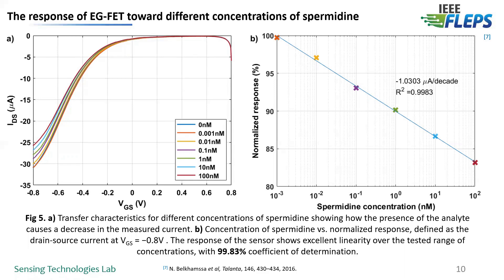Our results showing decreased drain current are in line with those presented by Belkhazam and others, who also observed reduced drain current with increased analyte concentration. We constructed a calibration curve as a function of spermidine concentration and normalized response, finding a linear response in the range of 0.01 to 100 nanomolar. The linearity is represented by a coefficient of determination as high as 99.83%, while the sensitivity of our sensor, represented by the slope of the calibration curve, is 1.03 µA per decade.